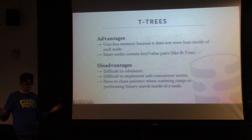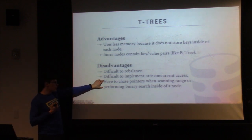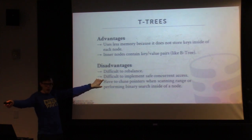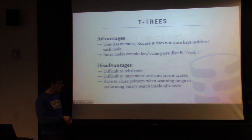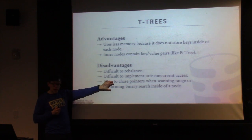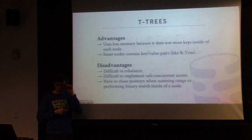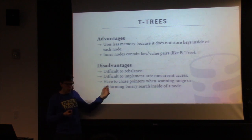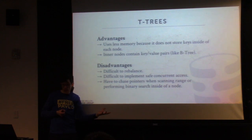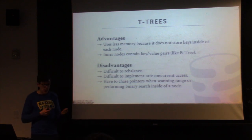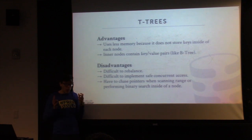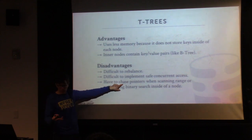The most obvious problem is that you're chasing pointers — any time you need to check whether a key is in a T-tree node, you have to go do a lookup on the tuple in memory and then look at the attributes. You have to understand that the design decision made back then is different from how things are now. In the 1980s hardware, CPU caches weren't that much faster than DRAM, so chasing a pointer to DRAM to find the tuple wasn't that much slower than looking in L1 or L2 cache. In the 1990s, CPU caches got much faster, so now chasing pointers is actually a terrible idea.